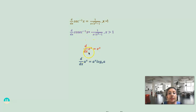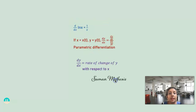The derivative of e raised to x is e raised to x. The derivative of a raised to x is a raised to x times log a to the base e. The derivative of log x is 1 by x.